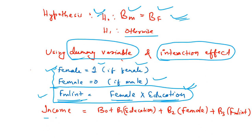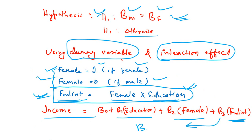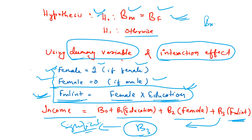Our new regression equation has income as the dependent variable, with education, the dummy variable female, and the interaction term as independent variables. When we estimate this, all we need to look at is beta 3. If beta 3 is significant, it tells us that the estimates for male and female have different marginal impacts. If it is not significant, we accept the null hypothesis — both groups have the same marginal effect.